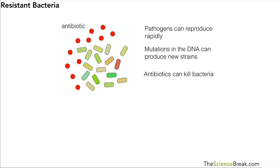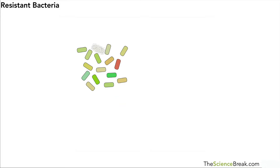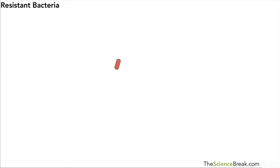Antibiotics kill bacteria or pathogens. You can imagine the antibiotic will come into contact with the pathogen and kill them off. However, in this case we've got one particular individual that is resistant — it's a strain that is resistant to antibiotics.